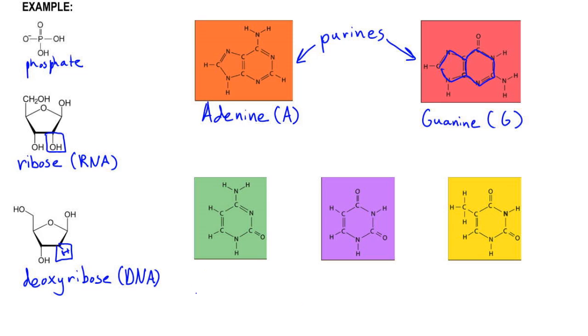Now, looking below adenine, we have cytosine, represented with the letter C. Uracil, with the letter U. And thymine, represented with the letter T. These molecules are called pyrimidines.